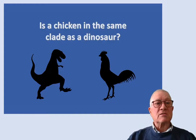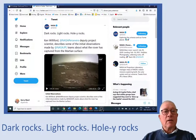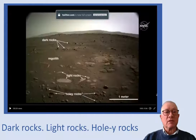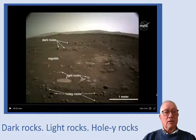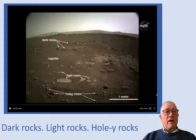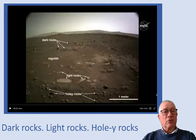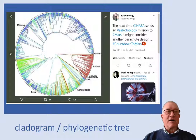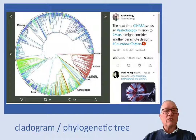But before I try and answer, NASA scientist Ken Williford, a deputy project leader of NASA Perseverance, described some of the initial observations made as dark rocks, light rocks, and holy rocks. It was as much of a classification as they could make from an initial picture sent back from Mars. Meanwhile, at Astrobiology, a tweet teased NASA that they might consider another parachute design the next time they're looking at astrobiology on Mars.